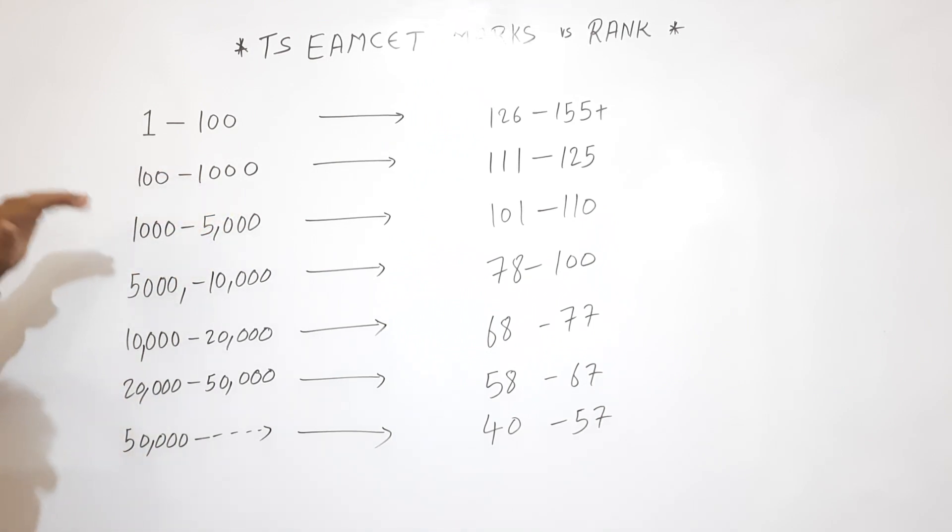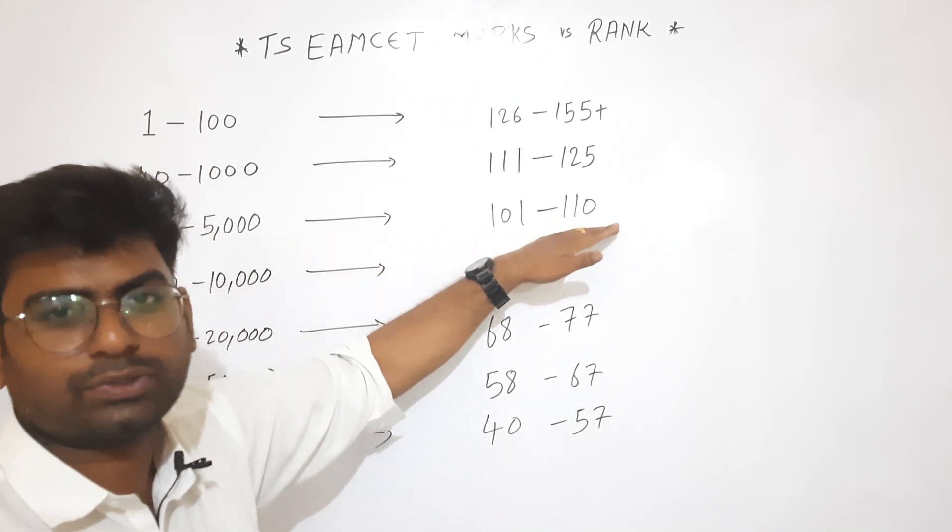And if you are 1000 to 5000 rank below, you are 101 to 110 marks, you rank above the strengths.